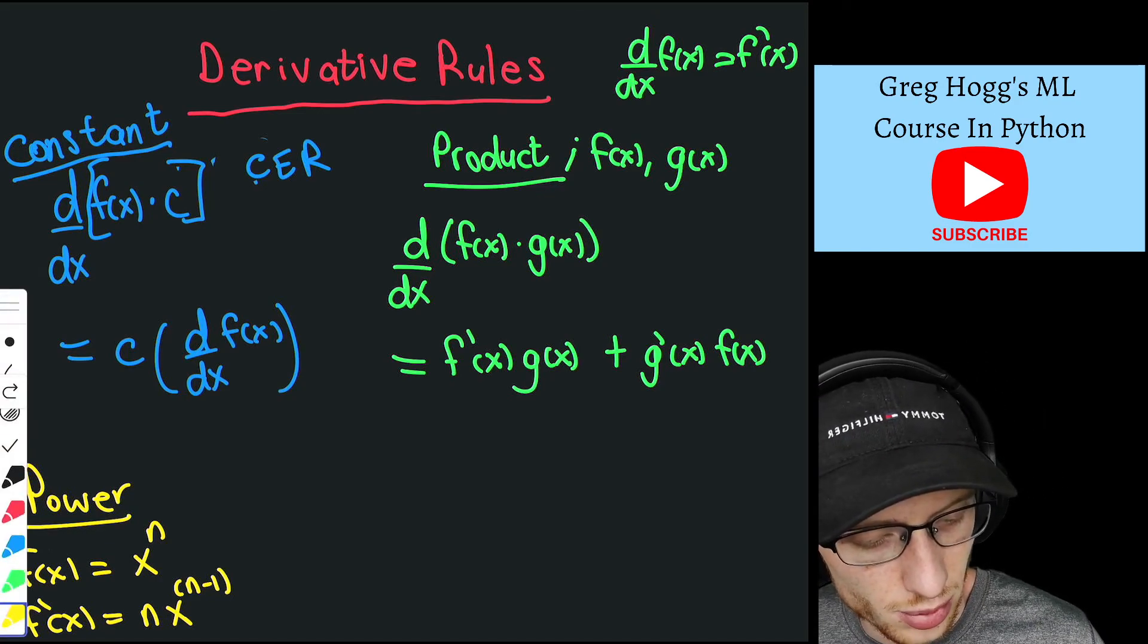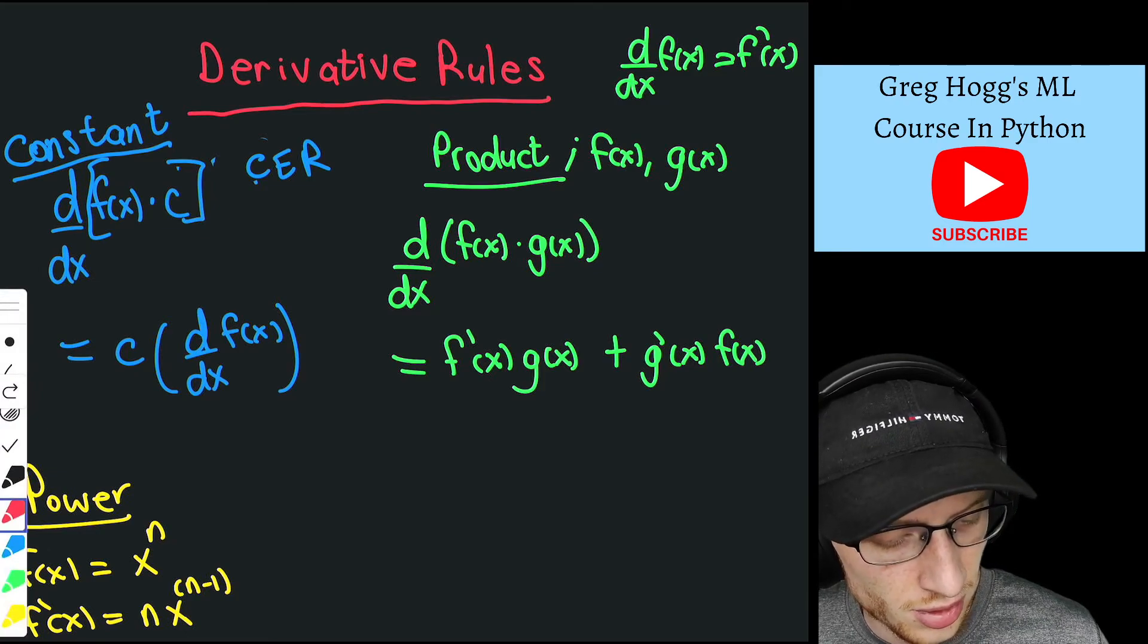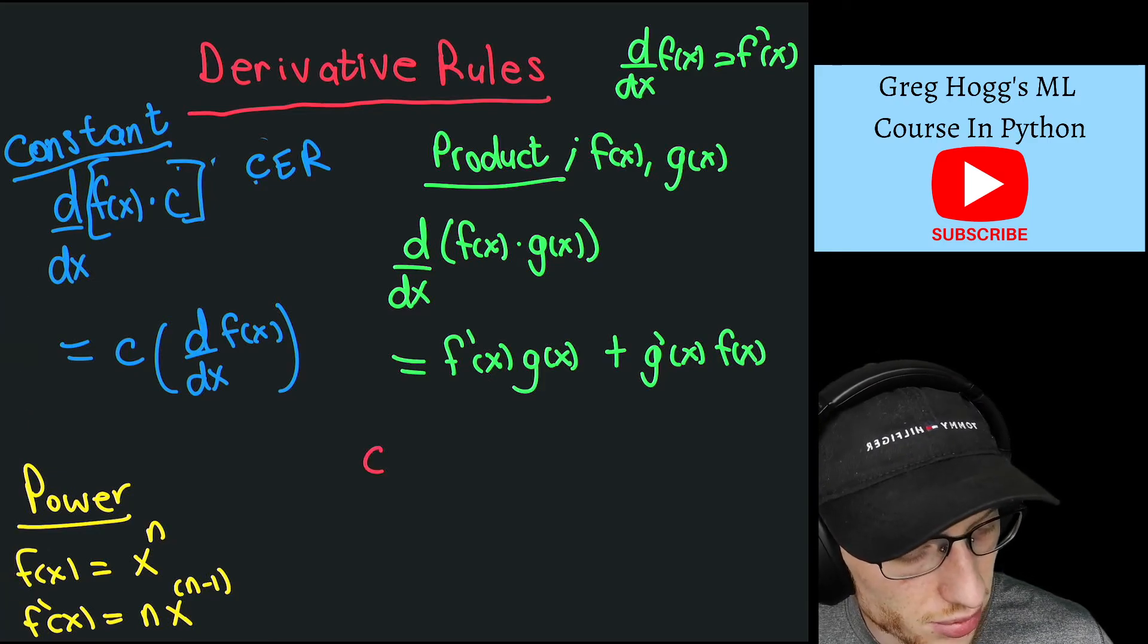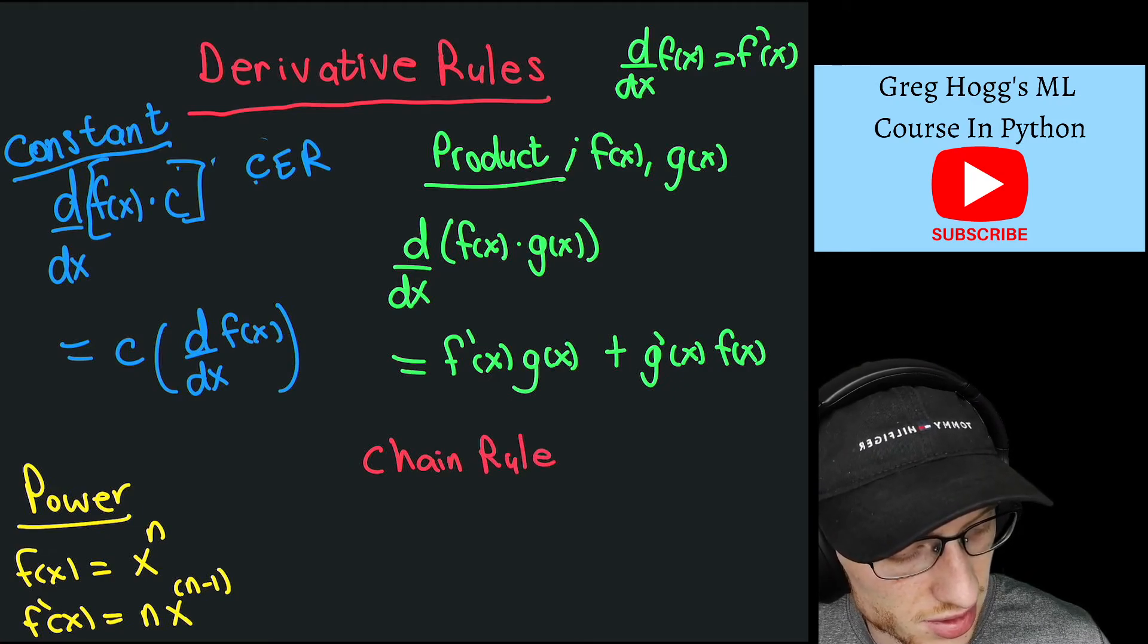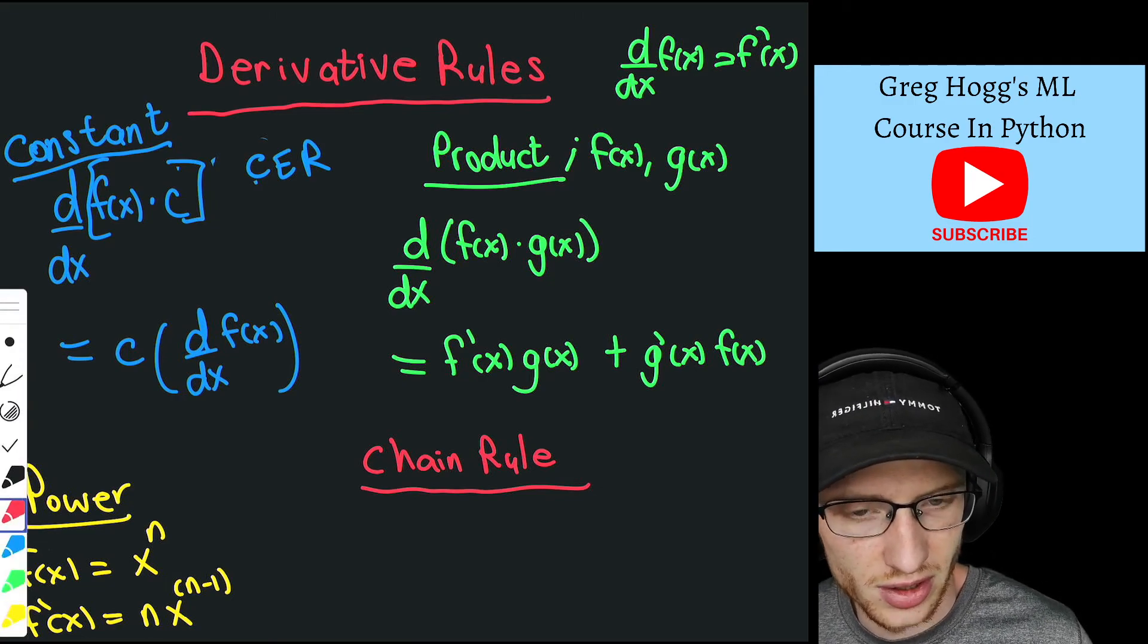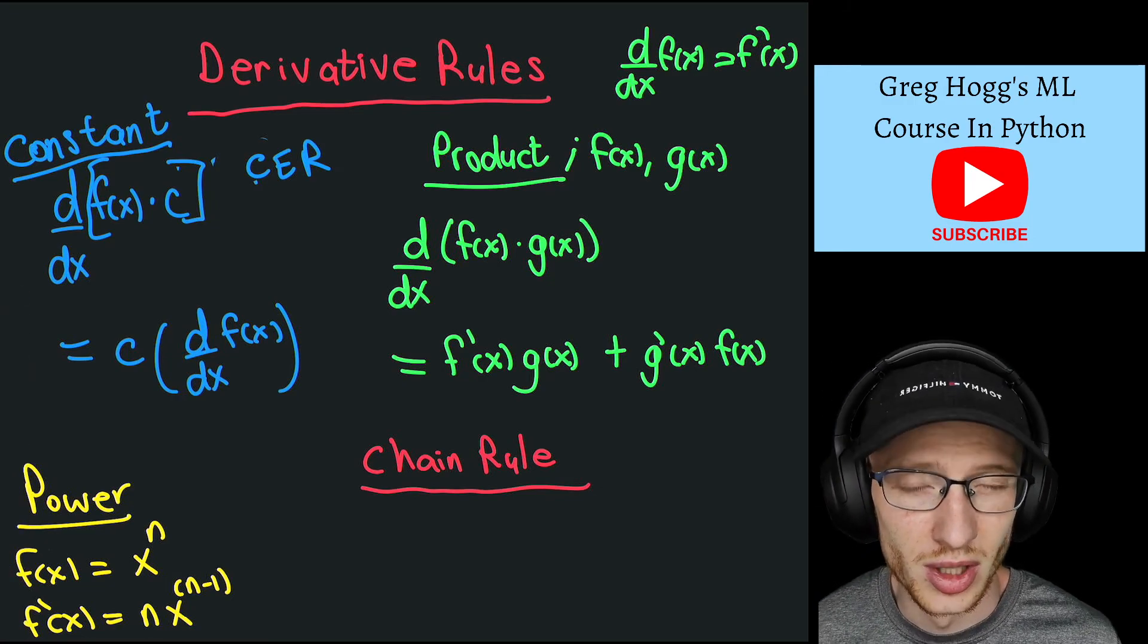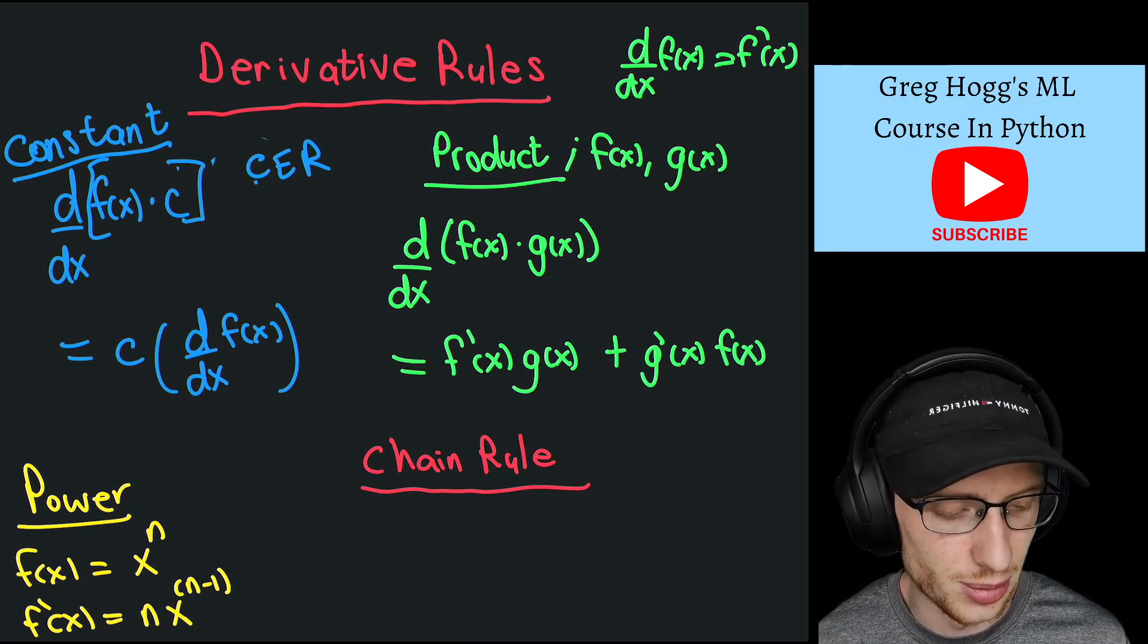Finally, we have the chain rule, which has a lot of theory in calculus and is very important. It's basically for compositions of functions. Don't worry if this is confusing - we're going to do examples.